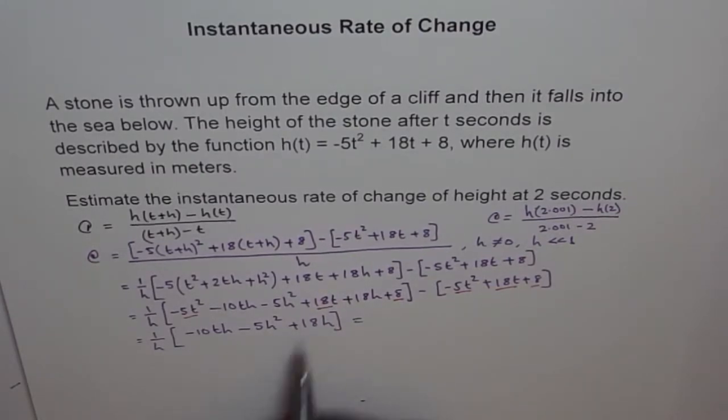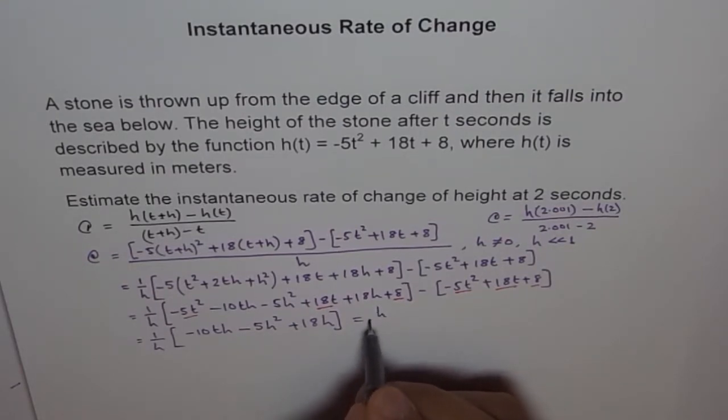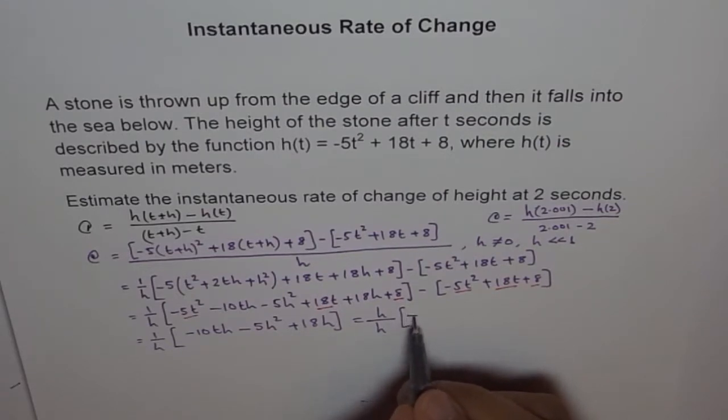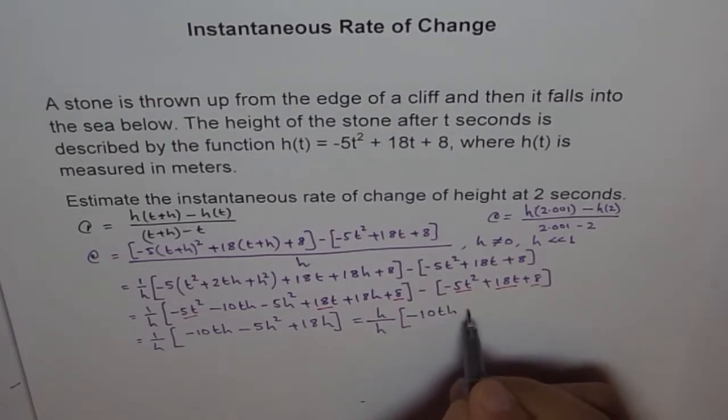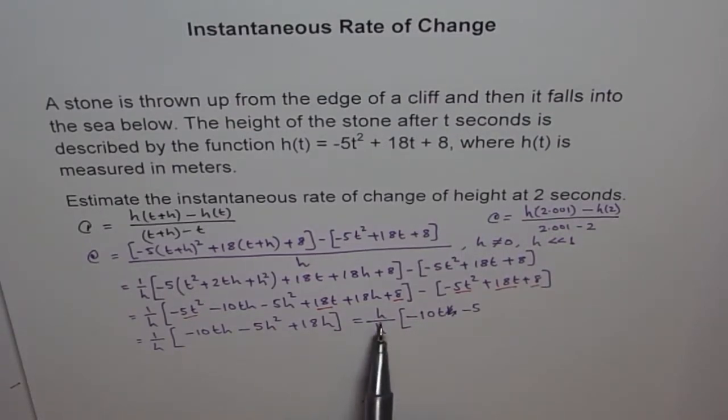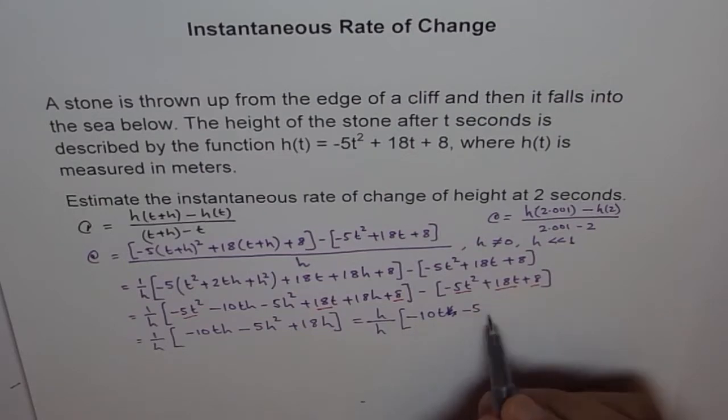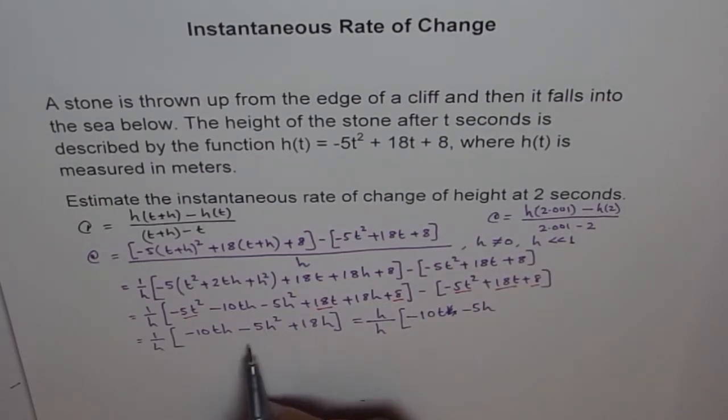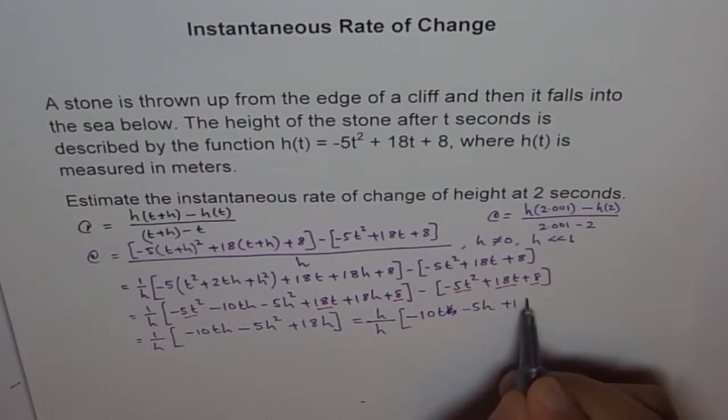Now, every term has a h in it. So, we can factor out h. So, we get h over h and within bracket we have -10, I could have taken minus also, it doesn't matter. -10, we took out h, so h won't come here. I am factoring out h, so h won't come here. -5h, this is square, so, +18.